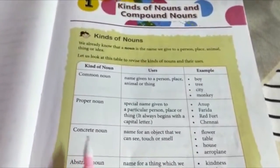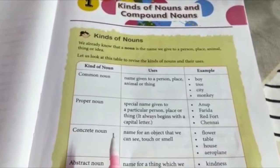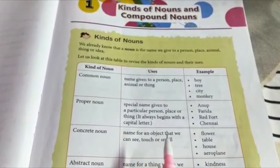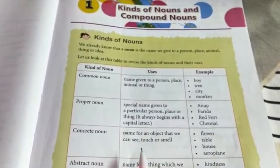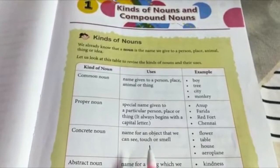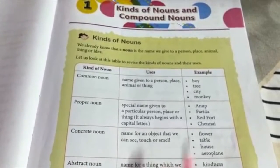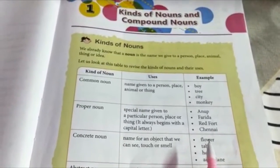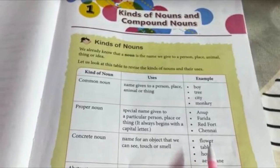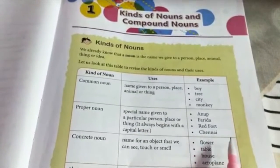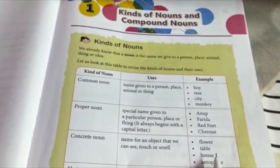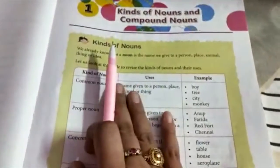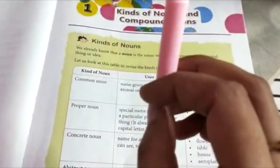Concrete noun. A concrete noun is the name for an object that we can see, touch or smell. For example, flower — we can see it, touch it, and smell it. Other examples: table, house, aeroplane, book, pen.